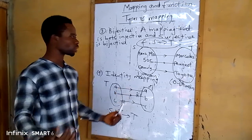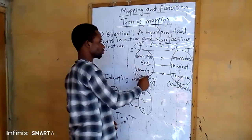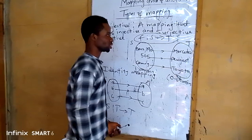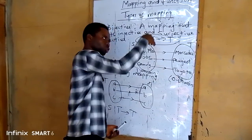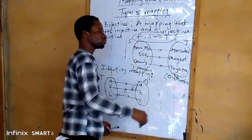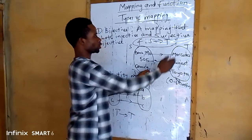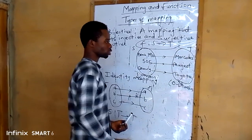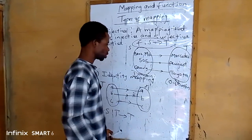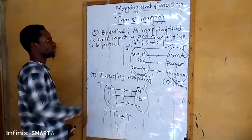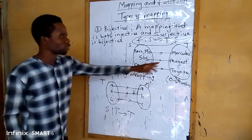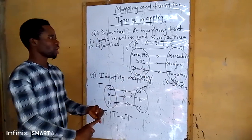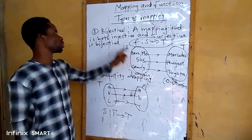Why do we call this injective? Because the elements are uniquely paired one-to-one, so it is injective. It is also called surjective because all the elements in the co-domain are also referred to as image or range. That's why we call it bijective — this diagram can be called both injective and surjective, and we can now call it bijective.